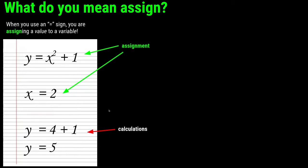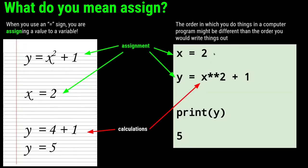This is a little different than how you might do it in Python or any computer program — you might use a different order. In Python, you would first assign the value of 2 to x, then write y = x² + 1. At that point, the computer says x is 2, so 2² + 1 = 5. It assigns the value 5 to y, and if you print y, you get 5.